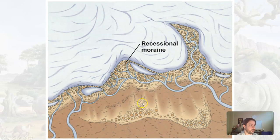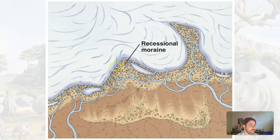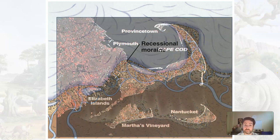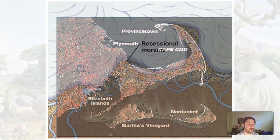As the glacier recessed, we had a little pause, so we had a recessional moraine where more sediment was deposited. I want you to keep an eye on the shape of this terminal moraine section and then this recessional moraine section. I'm going to overlay Cape Cod right on top of it. So this arm of Cape Cod is created because of the recessional moraine deposit. And then Nantucket and Martha's Vineyard are actually terminal moraine deposits — that's why those islands are there. They've been shaped by water, ocean, and climate for a while, but their initial deposits are there because of glaciers.